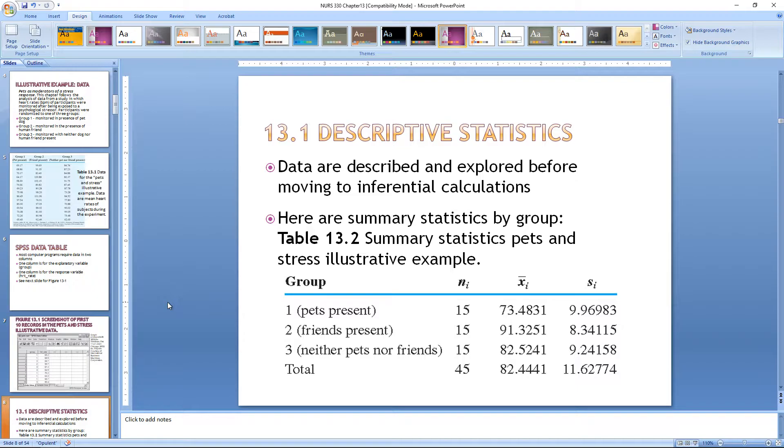Section 13.1 is descriptive statistics. Data are described and explored before moving to inferential calculations. Here are the summary statistics by group from Table 13.2. We had 15 people in each group. Here is our average heart rate per each group, our standard deviation per group, and then the total for all three groups underneath.